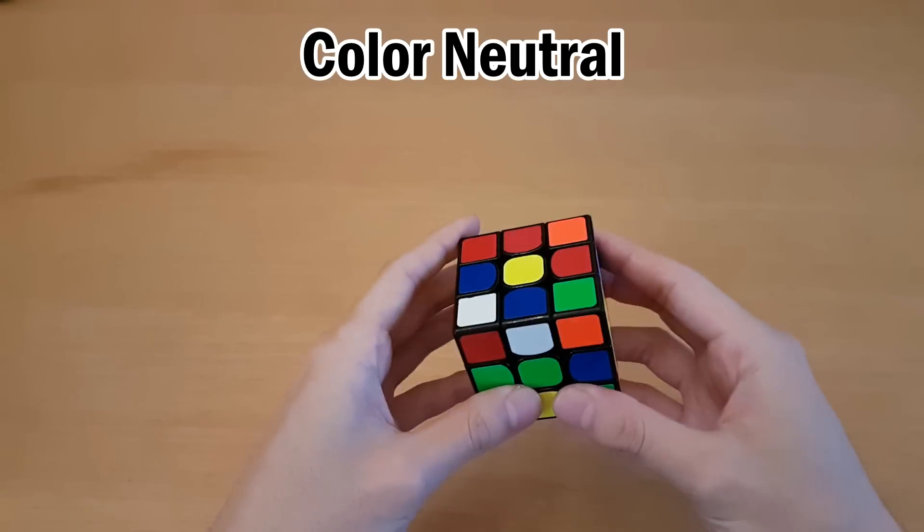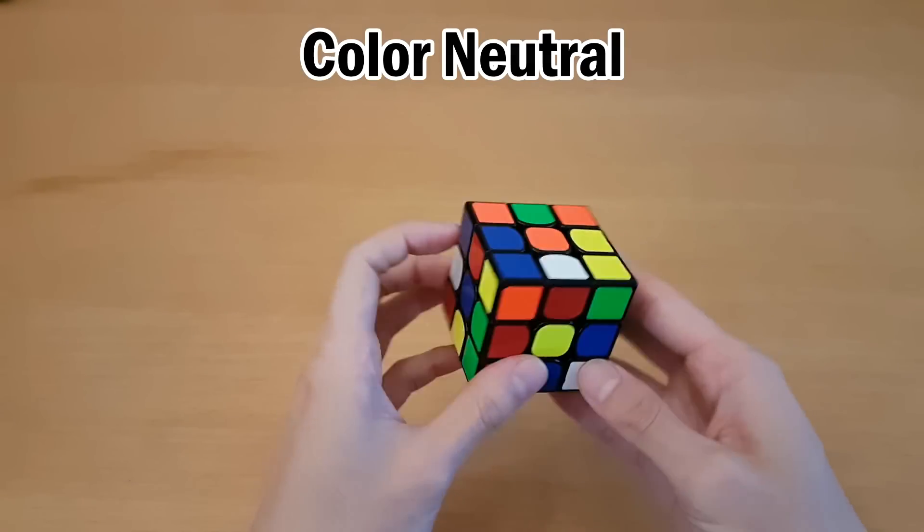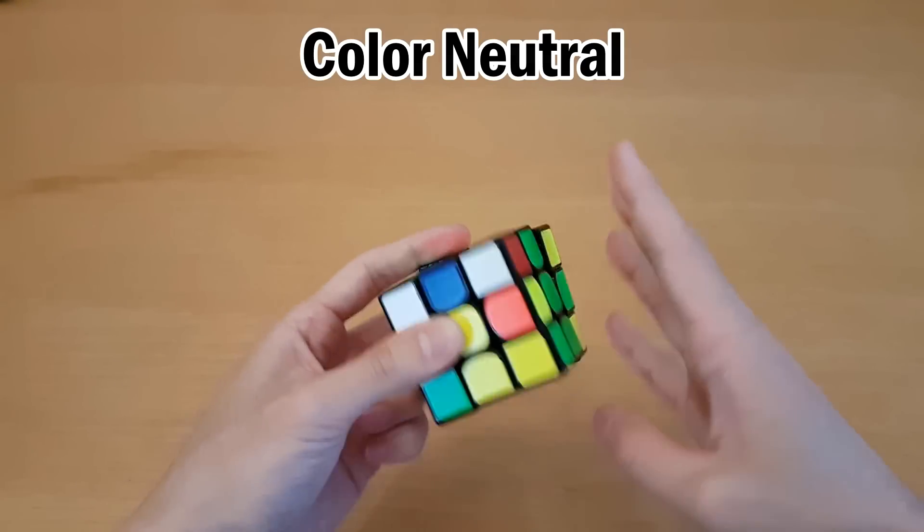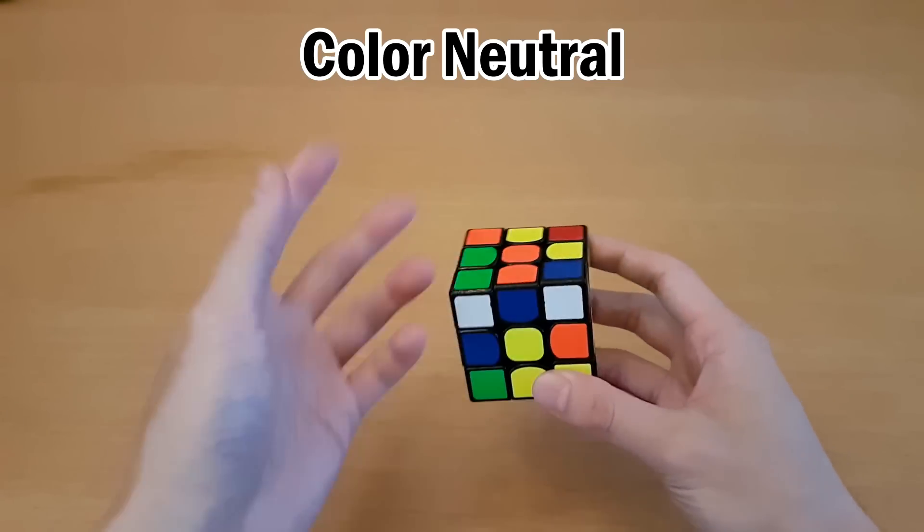Being color neutral means you can start the solve on any cross color. So if you happen to find one cross that's easier than the others, then you can start on that cross color instead and then just do the rest of the solve.